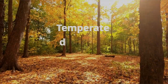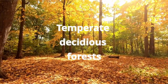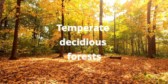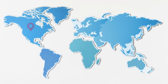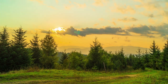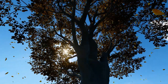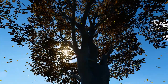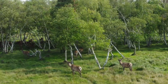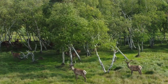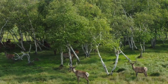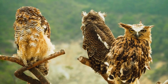Temperate deciduous forests can be found in areas with moderate temperatures, such as in North America, Europe, and Eastern Asia. These forests have four distinct seasons, and trees shed their leaves in the fall to prepare for winter. You will find various animals living here, such as deer, squirrels, and owls.